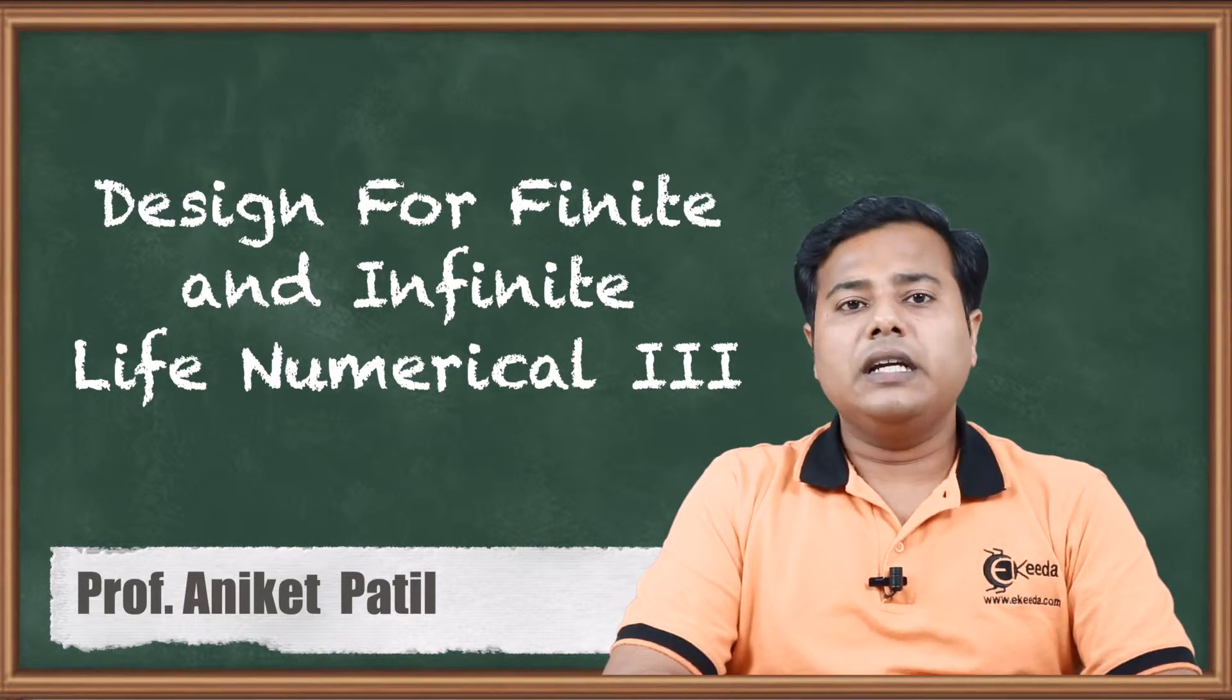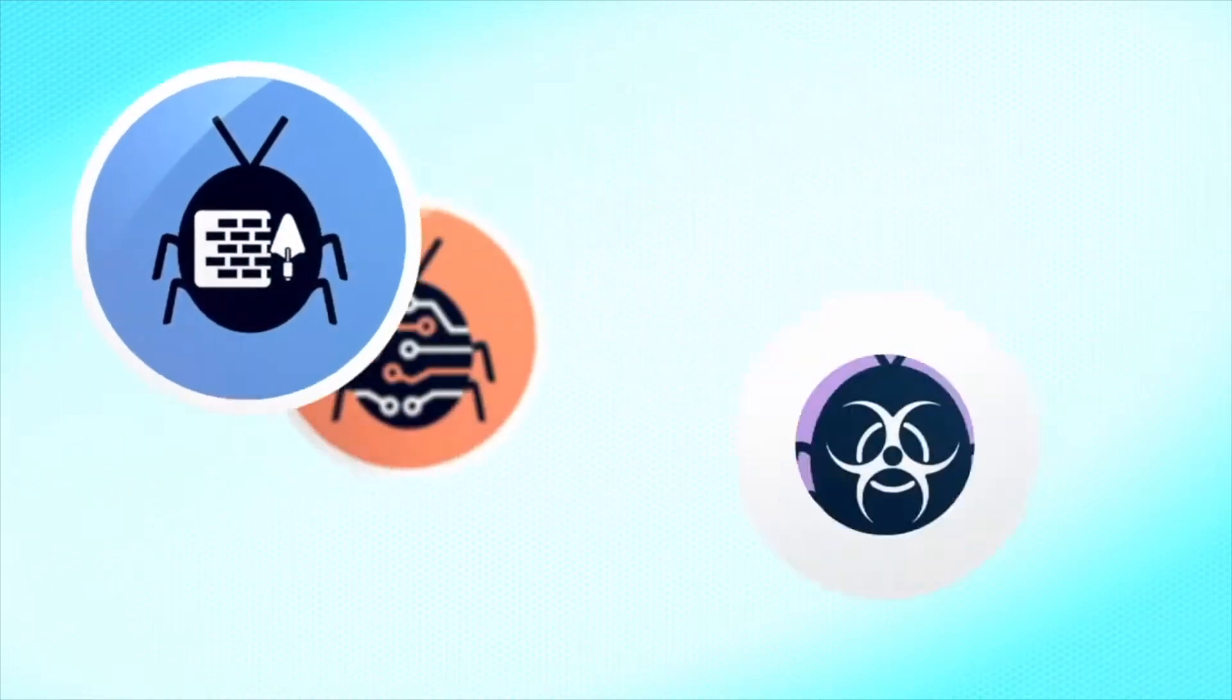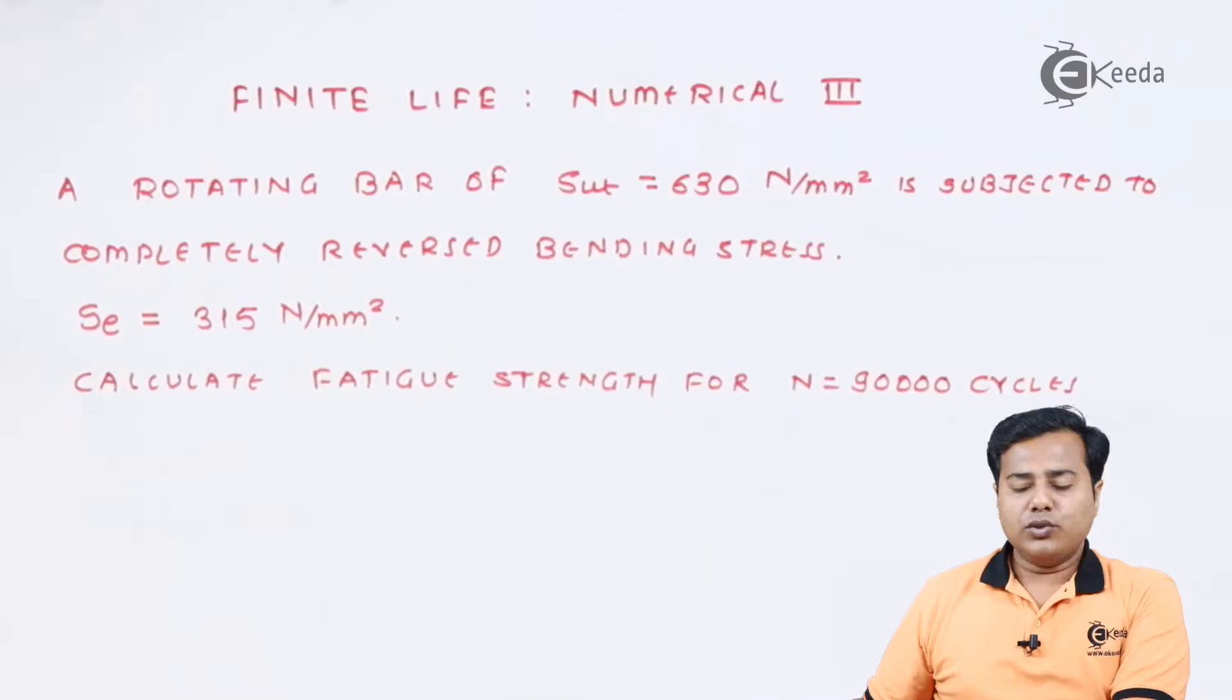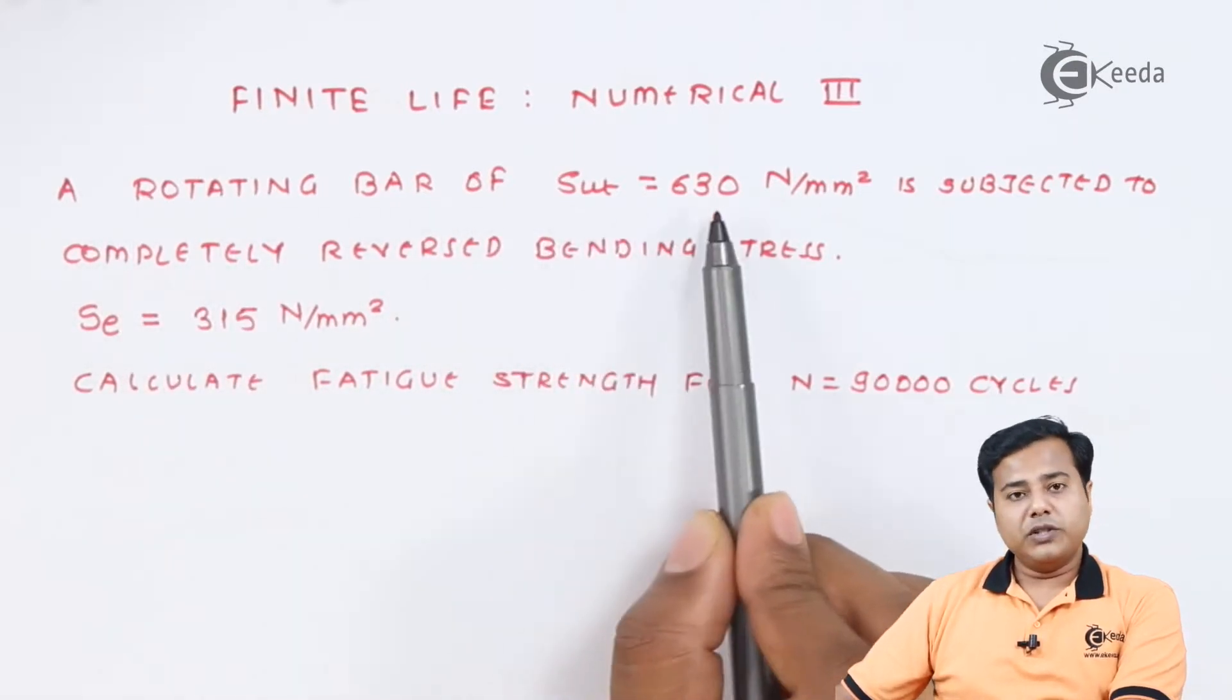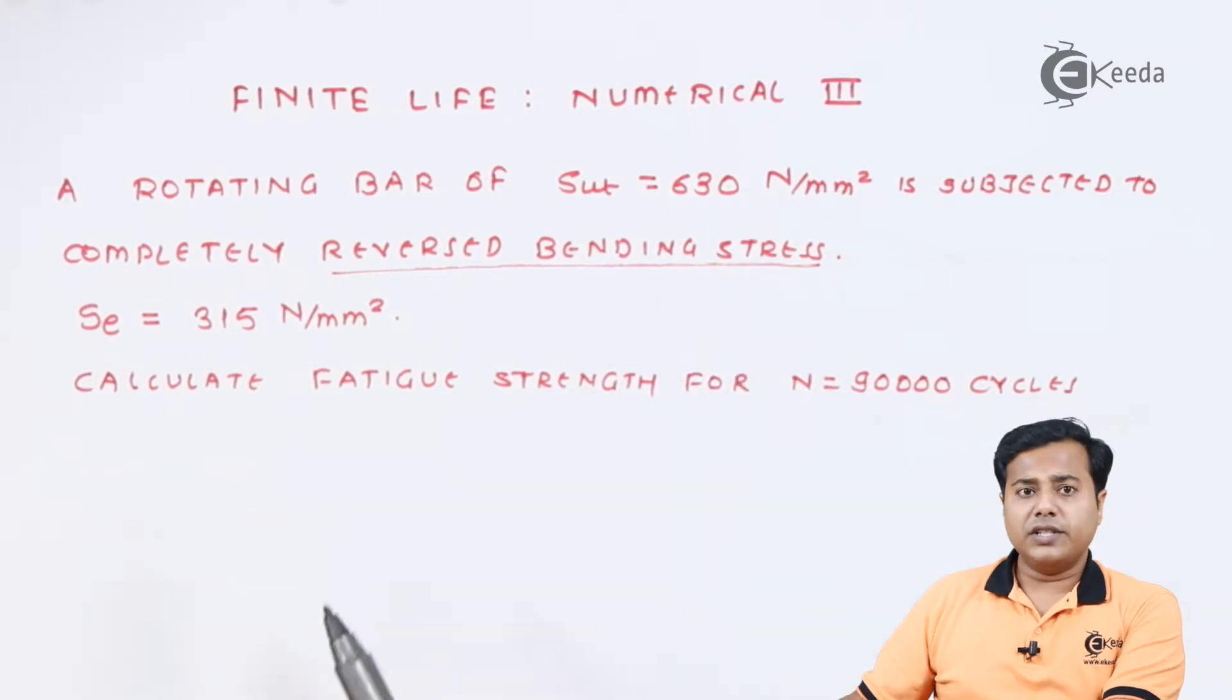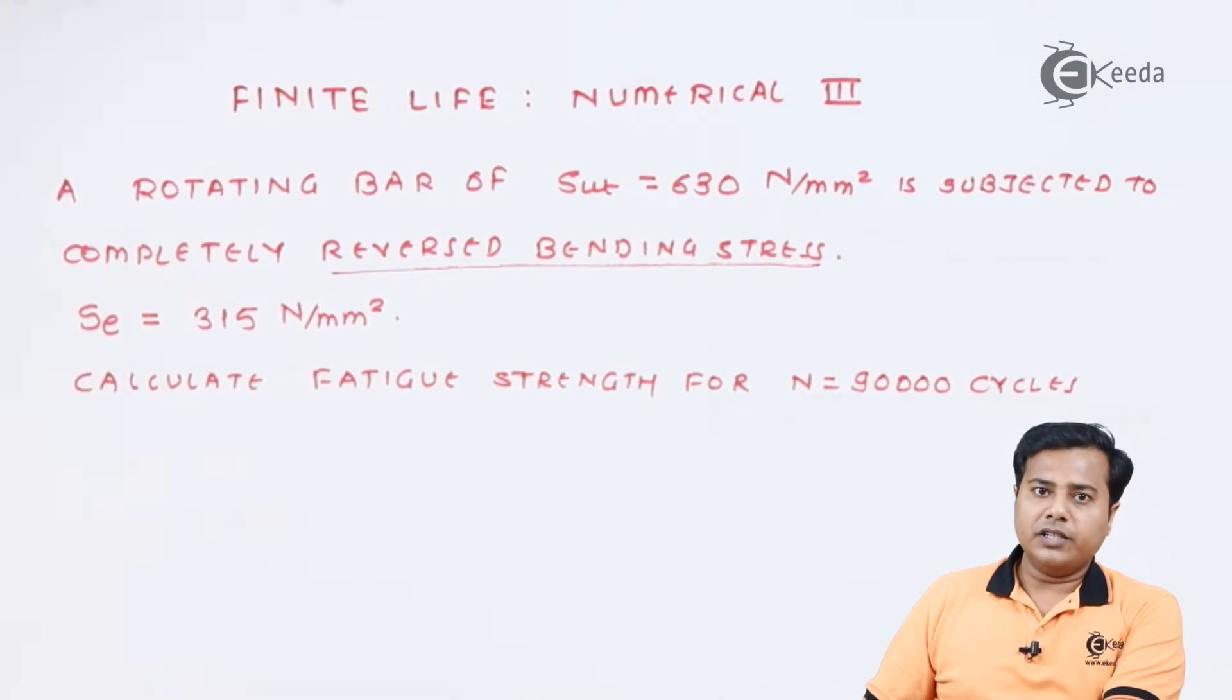So let us begin with it. Students, the problem statement is there in front of us. It says that a rotating bar of this particular material property is subjected to completely reverse bending stress. Here the word bending stress is very important. This bending stress we are going to consider the bending aspect. Of course, we have been given the endurance limit already.